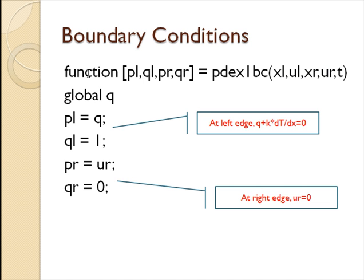The way that looks is there's this function pdex1bc. The inputs are x at the left edge, u or temperature at the left edge, x at the right, u at the right, and time. So you can use any of those in your boundary condition. You want to define p at the left, q at the left, p at the right, q at the right. p at the left is q. q at the left is one. p at the right is ur. And q at the right is zero. So those four things set up our heat flux on the left and our temperature on the right.